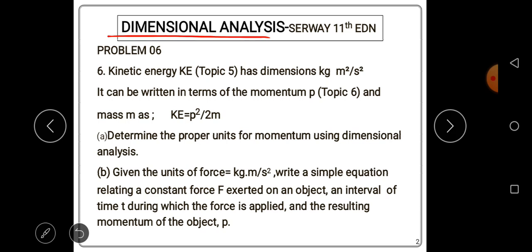So, in physics, the word dimension denotes the physical nature of a quantity. The distance between two parts, for example, can be measured in feet or meters, which are different ways of expressing the dimension of length.